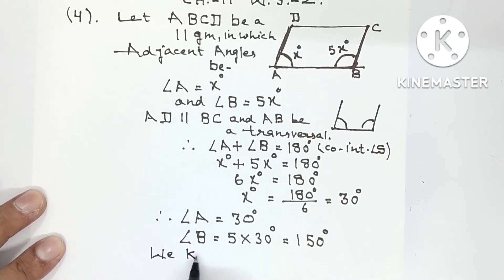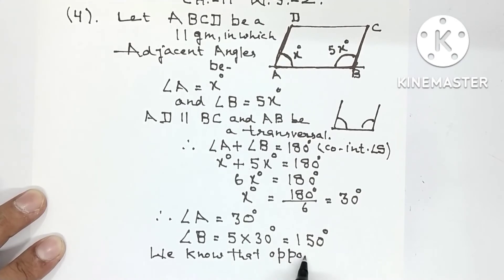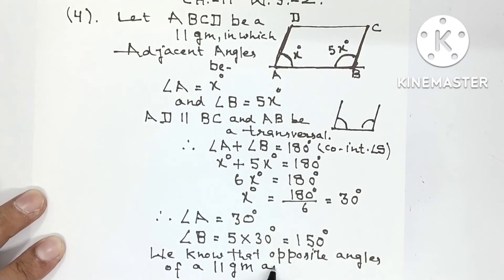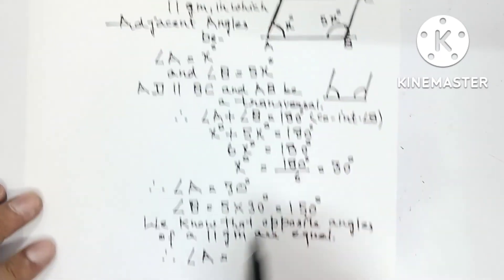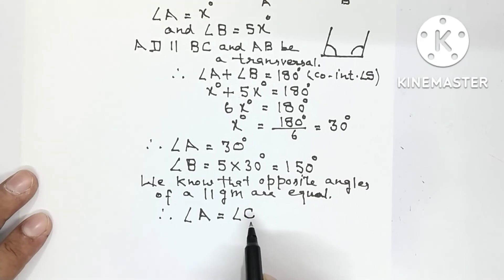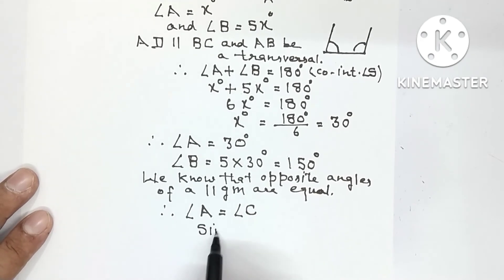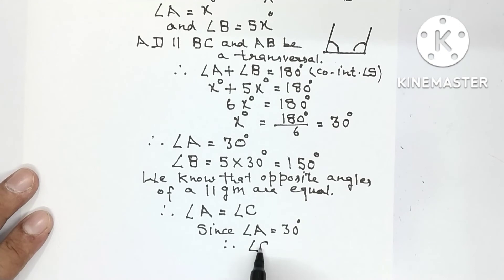We know that opposite angles of a parallelogram are equal — this is a property of parallelograms. So angle A is opposite to angle C, meaning angle A = angle C. Since angle A = 30 degrees, therefore angle C = 30 degrees.